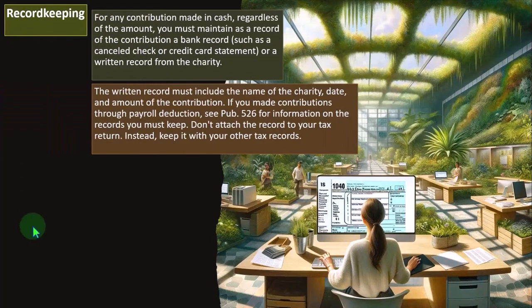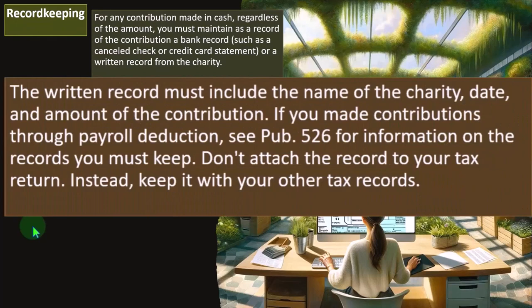The written record must include the name of the charity, date, and amount of the contribution. If you made contributions through payroll deductions, see Publication 526 for information on records you must keep. Don't attach the record to your tax return — instead, keep it with your other tax records.